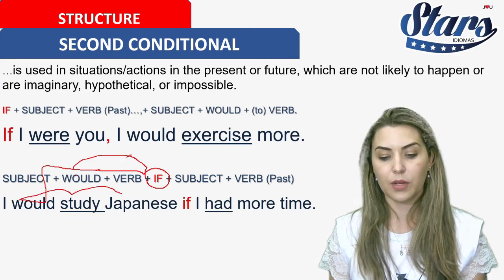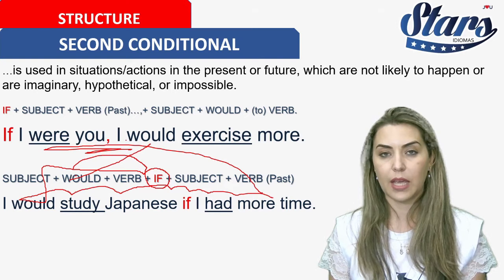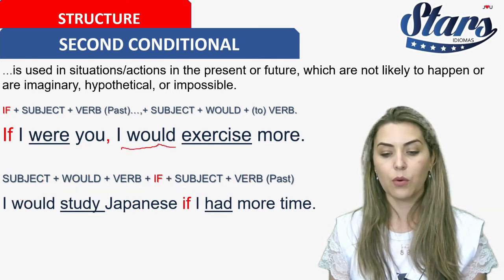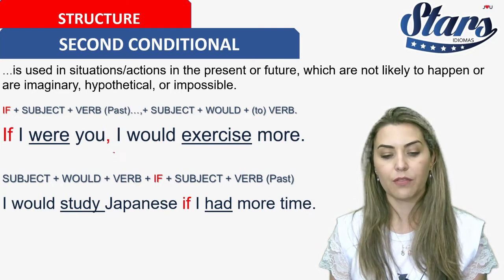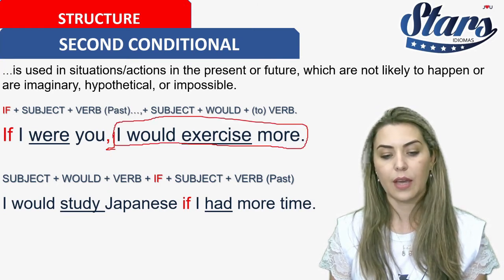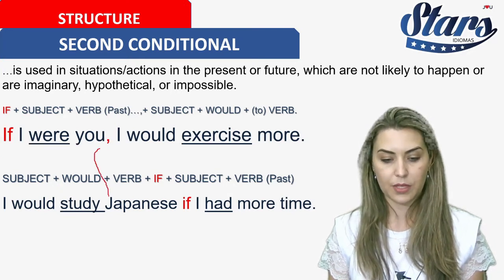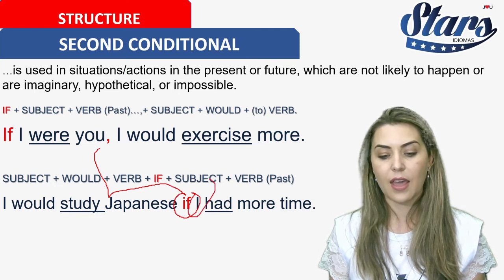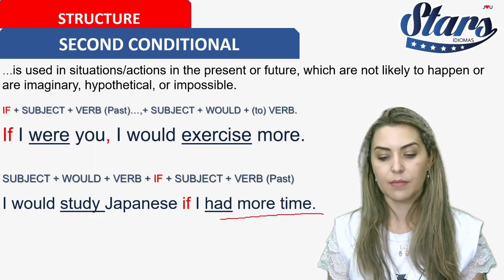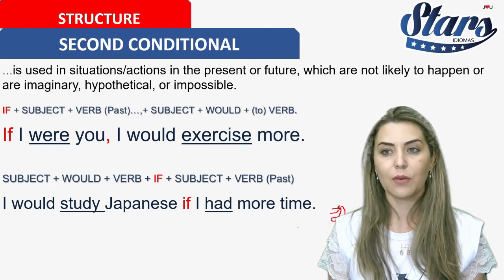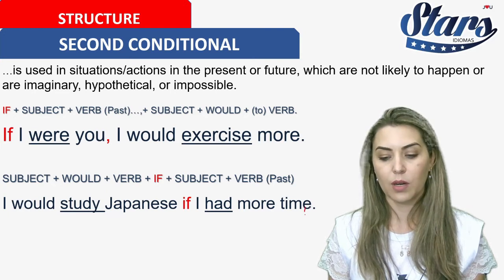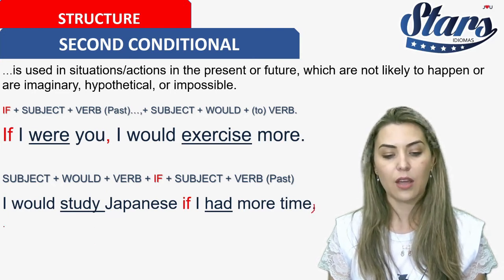There is another structure when you bring 'if' to the middle of the sentence. For example: 'I would study Japanese if I had more time.' You can also say: 'I would exercise more if I were you.' When you put 'if' in the middle, you do not need a comma. The sentence is reversed: I would exercise more — then if I were you. Or: if I had more time, I would study more Japanese.